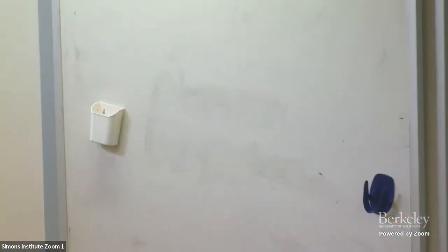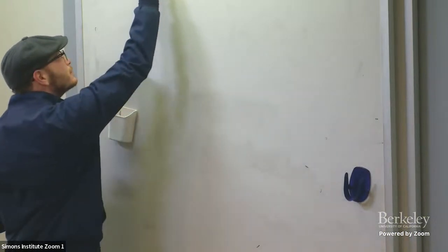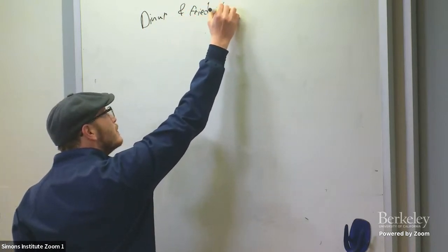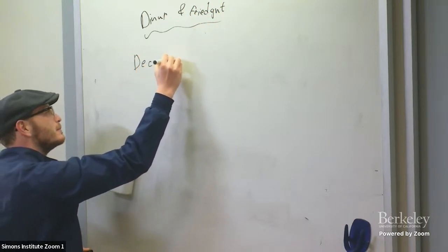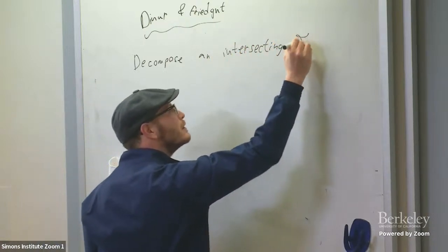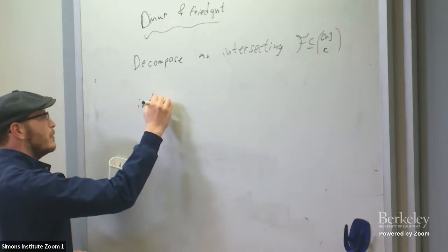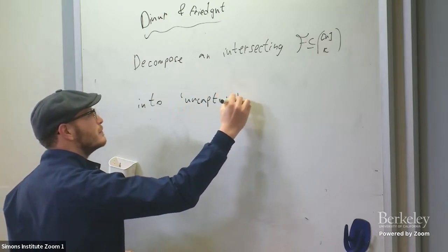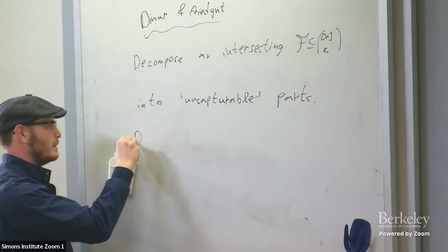I want to expand on the role of hypercontractivity for global functions in these results. The idea of the Friedgut method was to decompose an intersecting family into a structured part and pseudo-random uncapturable parts. Let's define what these uncapturable parts are.